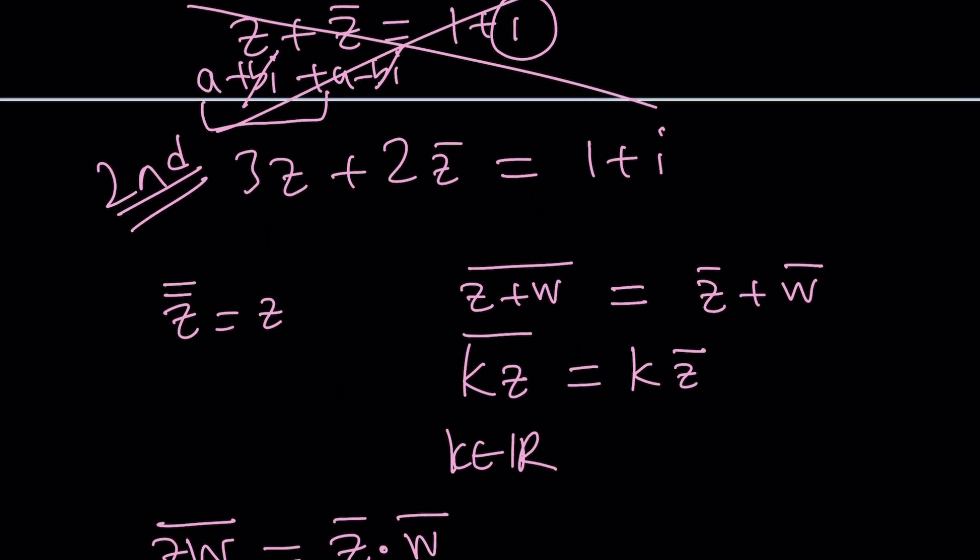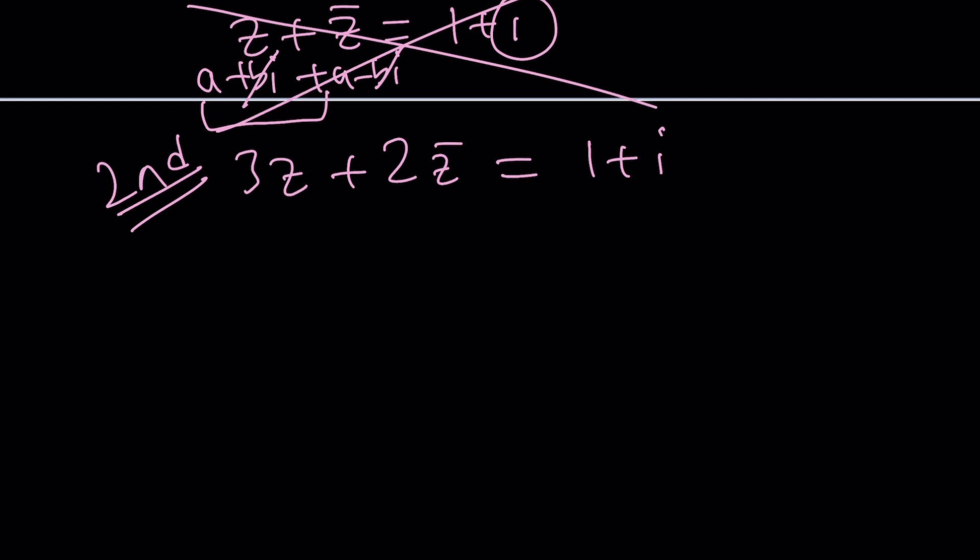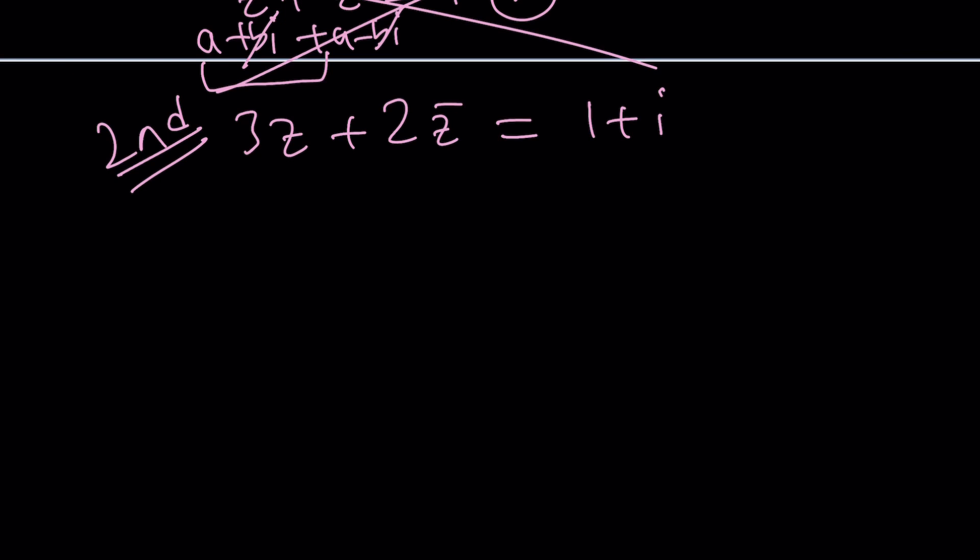We're going to conjugate both sides. Another property is, if z equals w, then z̄ equals w̄. When we do this, we're going to get the following: 3 is going to stay unchanged, but z is going to turn into z̄. Plus sign is unchanged. 2 is unchanged. z̄ becomes z. And then 1 + i becomes 1 - i, because that's the complex conjugate of 1 + i.